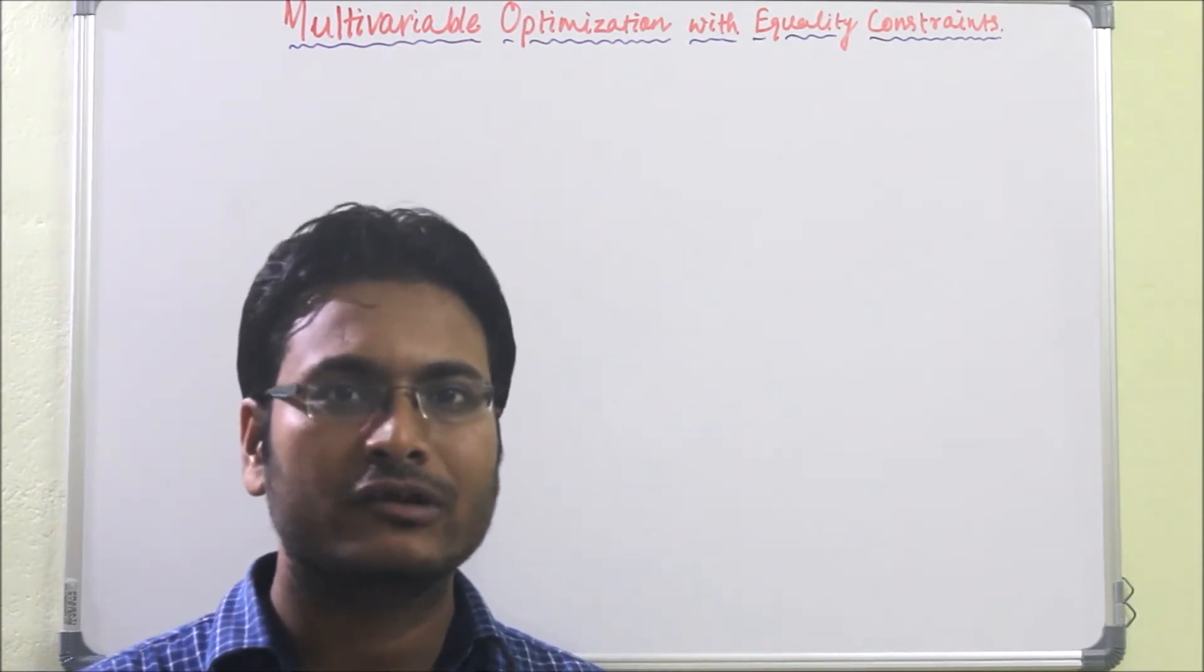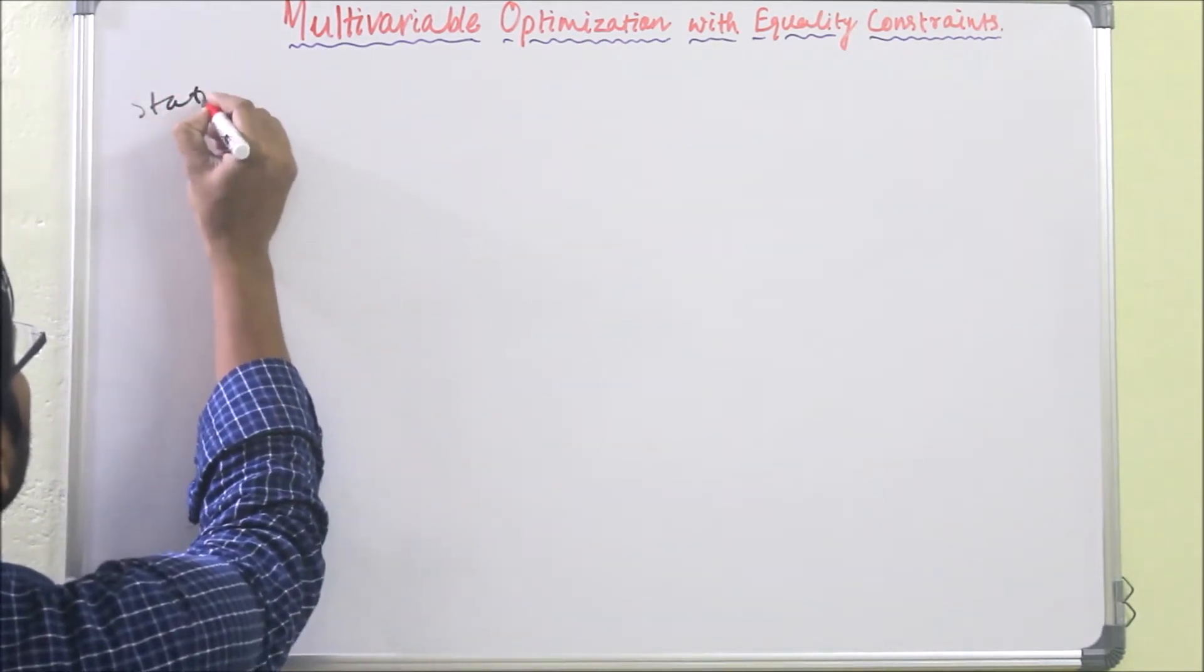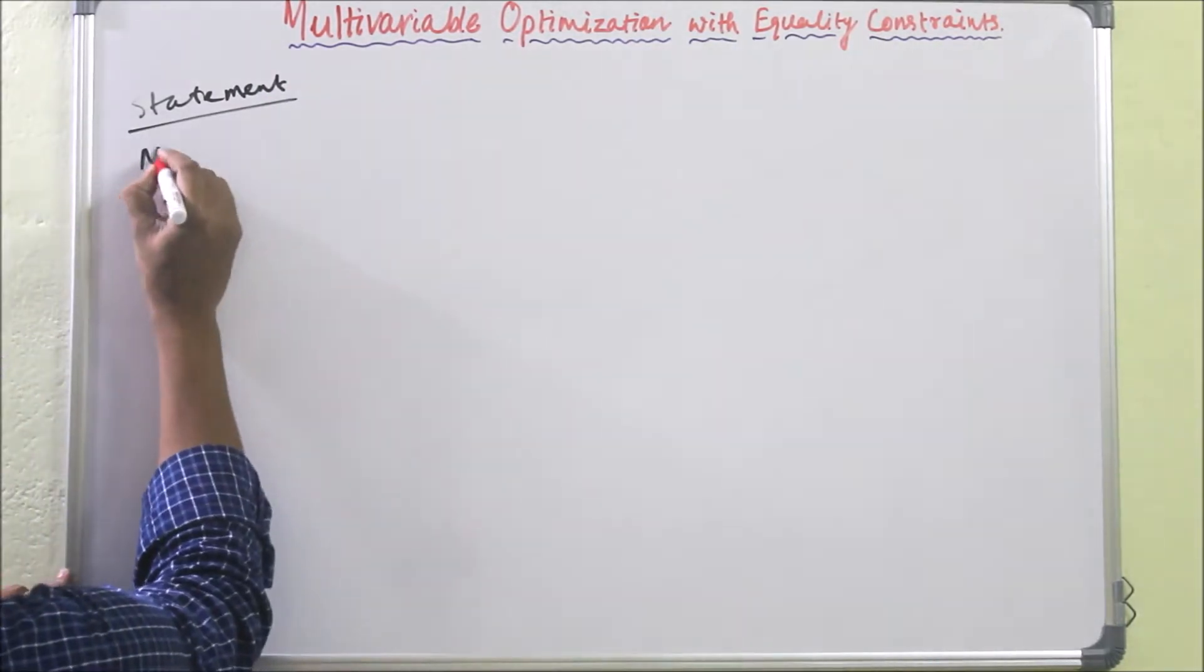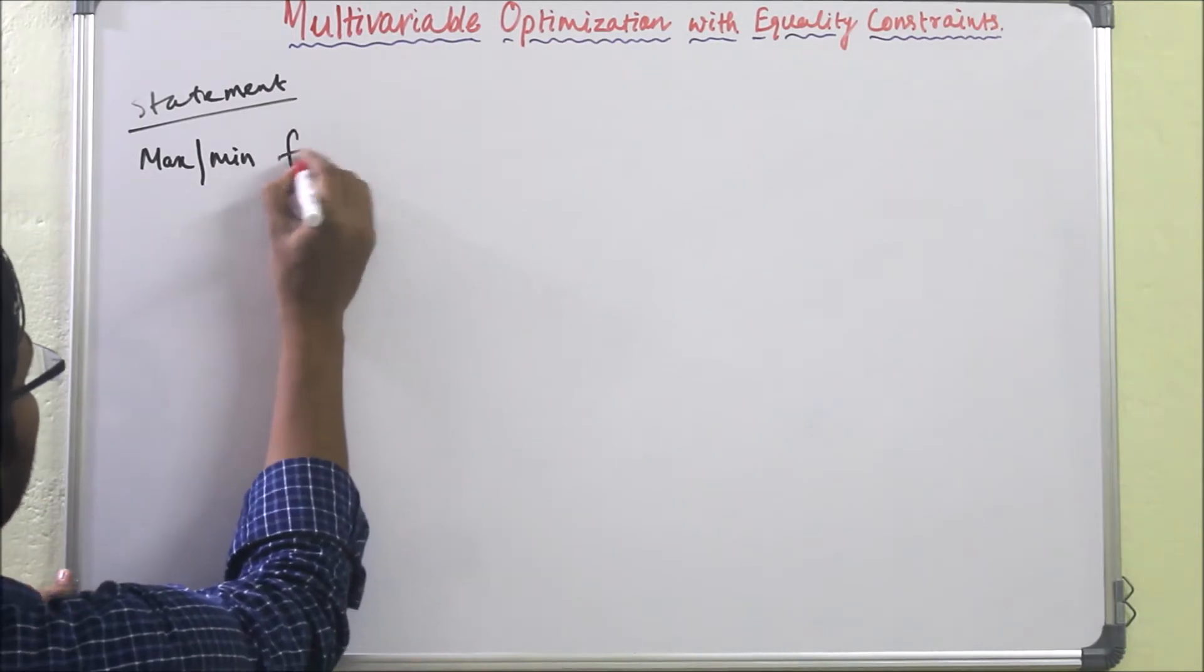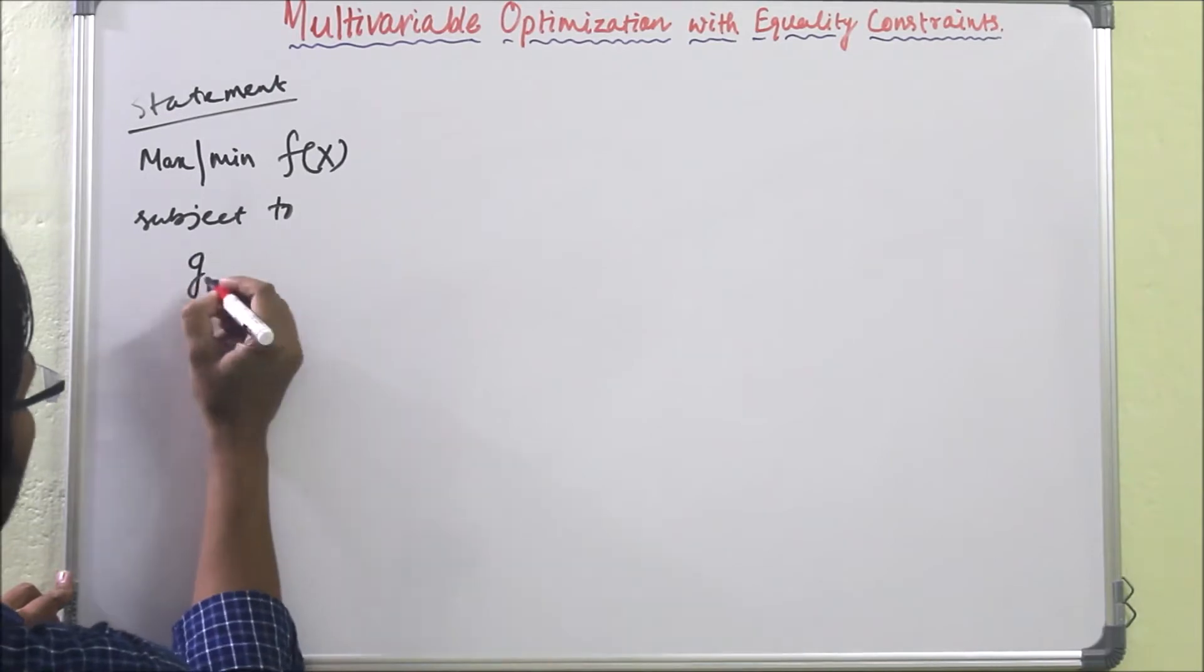First, the statement of the problem: if some function is given, that means maximize or minimize f(x) subject to constraints. What are the constraints?